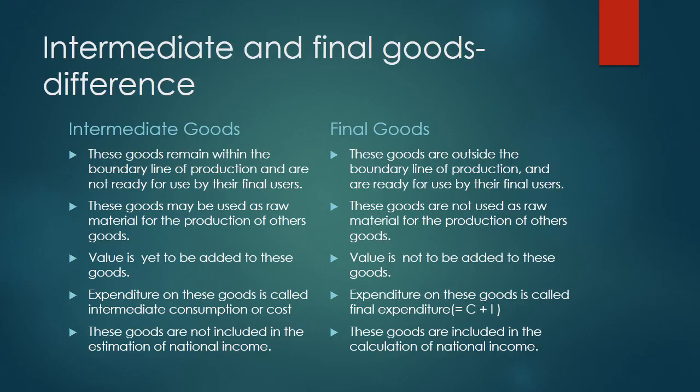A final distinction between intermediate goods and final goods: intermediate goods remain within the boundary line of production and value is yet to be added. Final goods are outside the boundary line, no value is to be added, and they are available for consumption either to the producer or the consumer. The expenditure on these goods is called final expenditure, which is equal to C plus I, where C means consumption expenditure and I means investment expenditure.